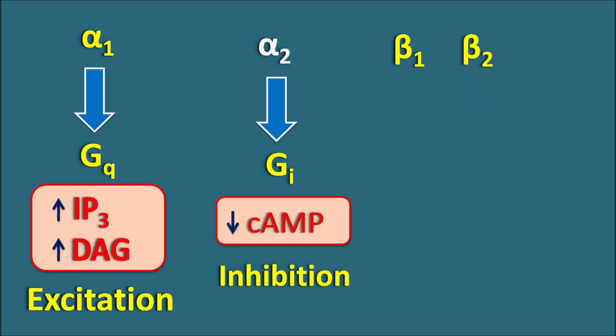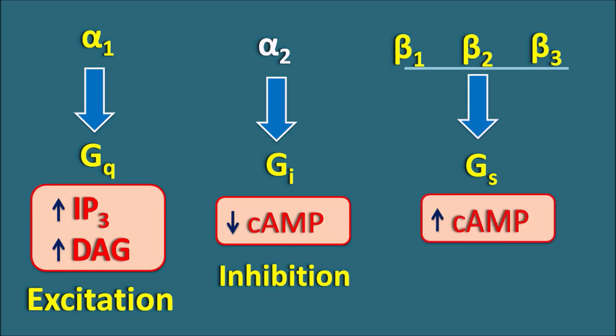Beta-1, beta-2, and beta-3 — all these beta receptors are G-alpha S, or Gs, meaning S indicates they are stimulatory in nature. So they are coupled with an increase in cyclic AMP, and they can produce either contraction or relaxation based on the type of target organ.